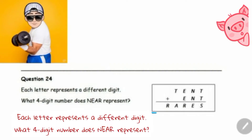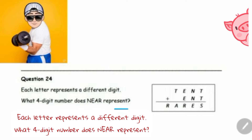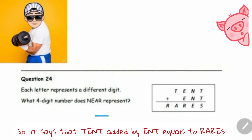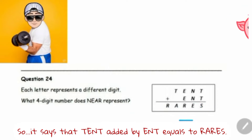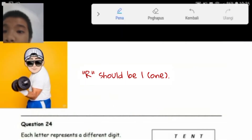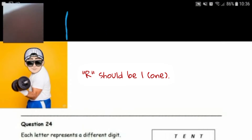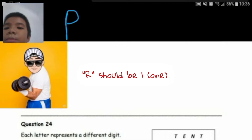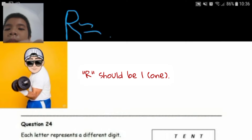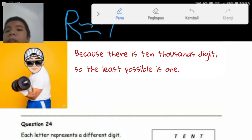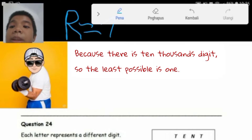Each letter represents a different digit. What 4-digit number does NEAR represent? It says that 10 added by N is equal to RED. R should be 1, because there is a 10,000 digit and the least possible value is 1.